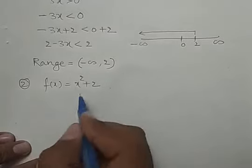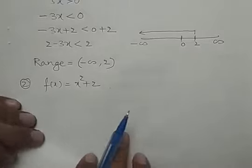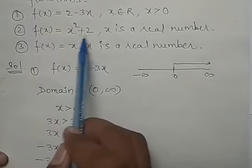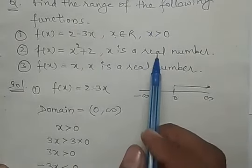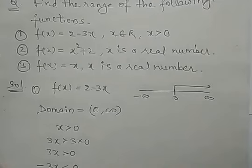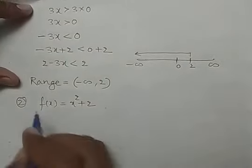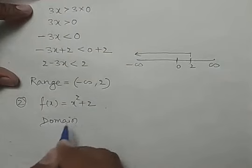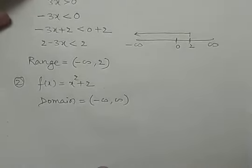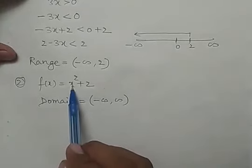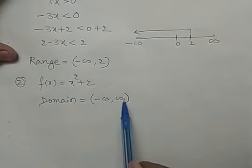अब second question: f(x) = x² + 2, and x is a real number. इस particular question में ऐसी कोई condition नहीं दी जैसे x > 0 — बस x is a real number बोला है। इसका मतलब जो domain है वो minus infinite to infinite होगा — complete domain। क्योंकि domain means x की value, और अगर x पूरा real function है तो x की values भी real values होंगी, मतलब (-∞, ∞) के बीच में होंगी।